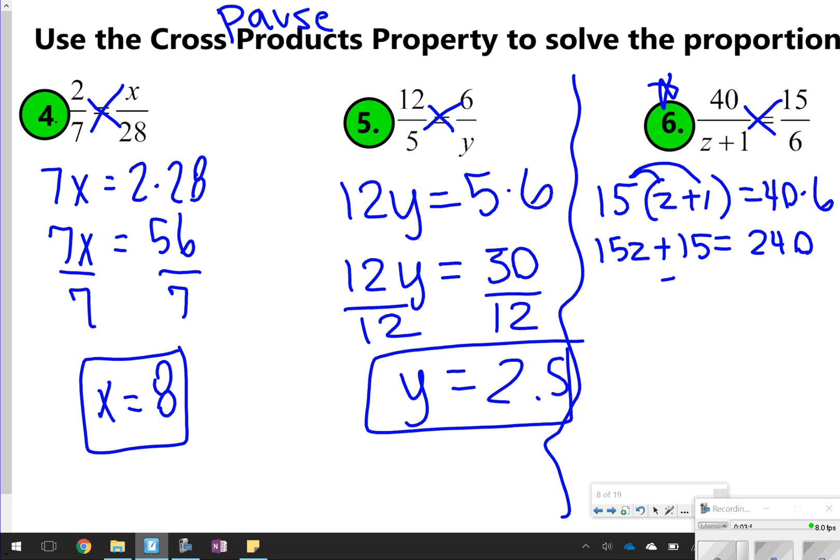So I'm going to be doing 240 minus 15. That would be 15z is equal to 225. And then I'm going to divide both sides by 15. 225 divided by 15 is actually 15. So z is equal to 15.